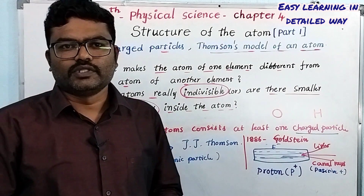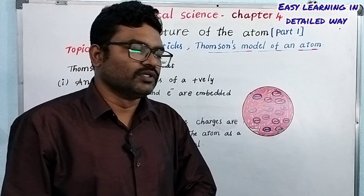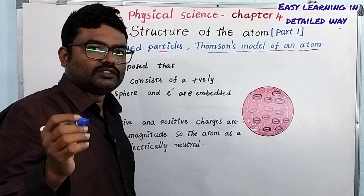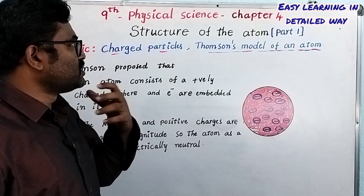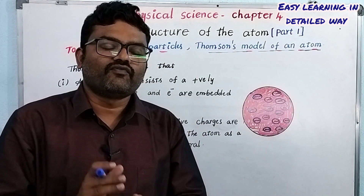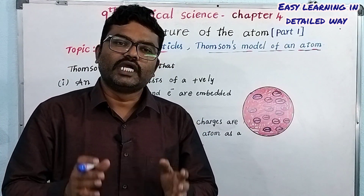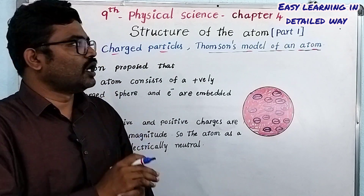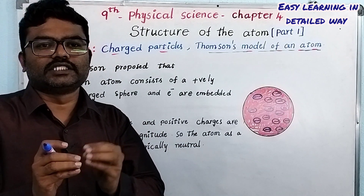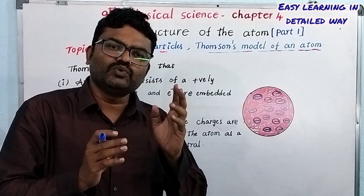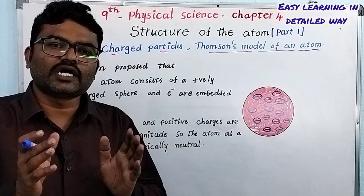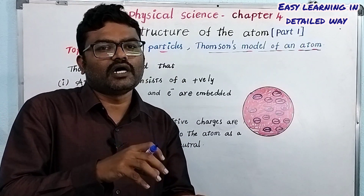Now let's discuss Thomson's model of the atom. Thomson is the first scientist to give a model of the atom. He described how these two subatomic particles — protons and electrons — are arranged inside the atom.